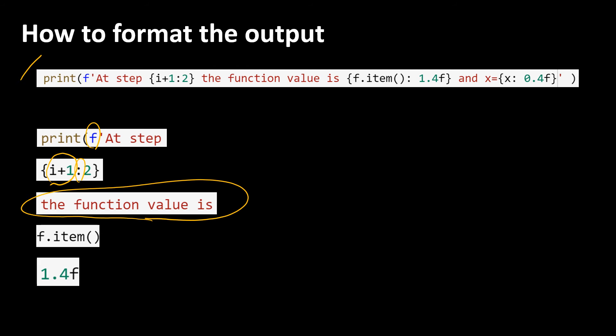f is the function value that we calculated and when we put .item we extract its value from the tensor containing it. 1.4f means we have a float number with four decimal places for our x to be printed out.